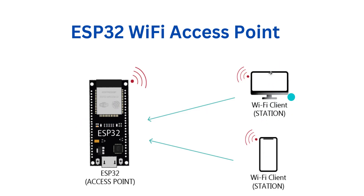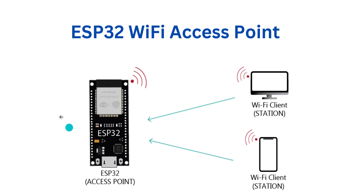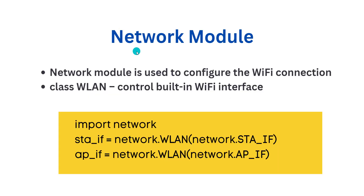The stations will connect to ESP32 in Access Point mode. These are the two modes. For using Wi-Fi communication in ESP32, MicroPython provides the Network Module. The Network Module is used to configure the Wi-Fi connection.